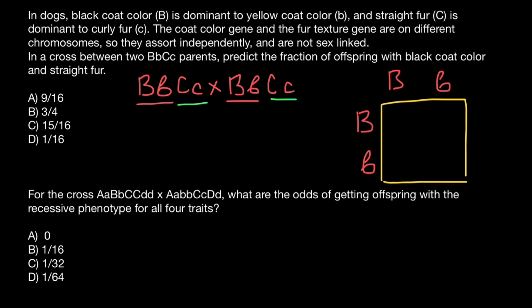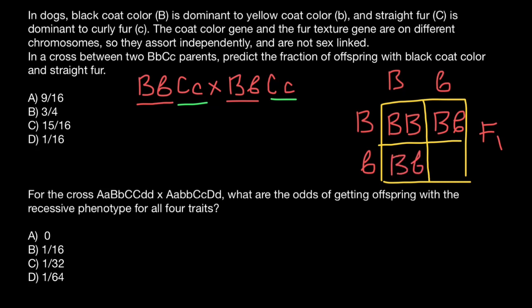Let's find the probability of the genotypes and phenotypes in the F1 generation. The Punnett square gives us: BB, Bb, Bb, and bb. According to our problem, we have to predict the fraction of offspring with black coat color. Black coat color requires at least one dominant allele — this is simple dominance. So three of these genotypes specify black coat color, and one specifies yellow.